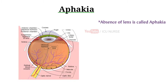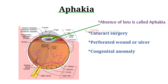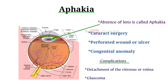Afakia is the absence of the lens of the eye, due to surgical removal such as in cataract surgery, perforated wound or ulcer, or congenital anomaly. It causes a loss of accommodation, farsightedness (hyperopia), and a deep anterior chamber. Complications include detachment of the vitreous or retina, and glaucoma.